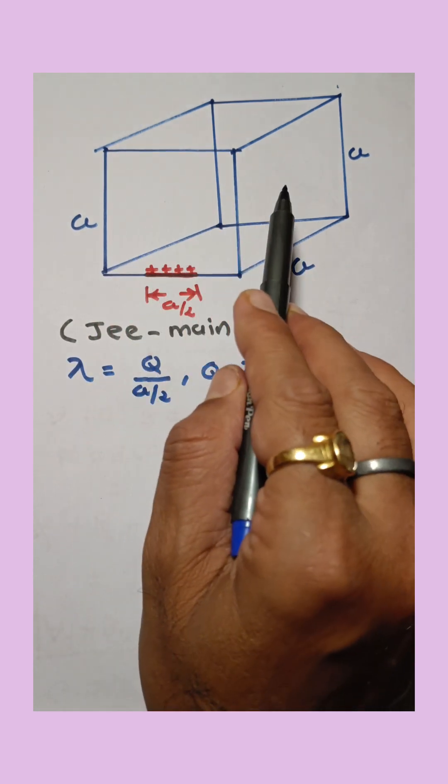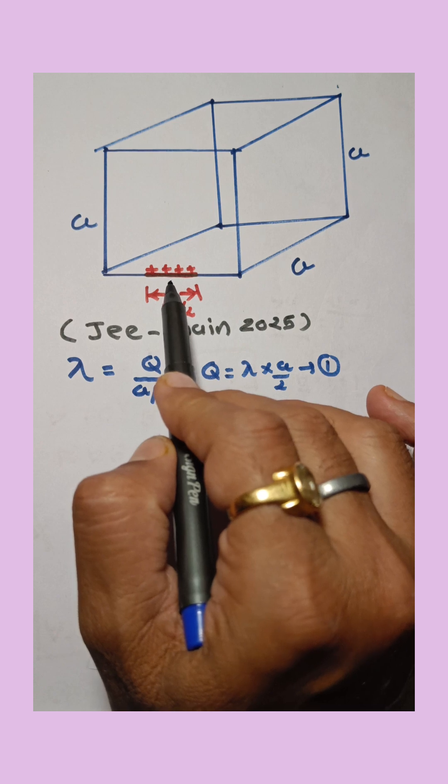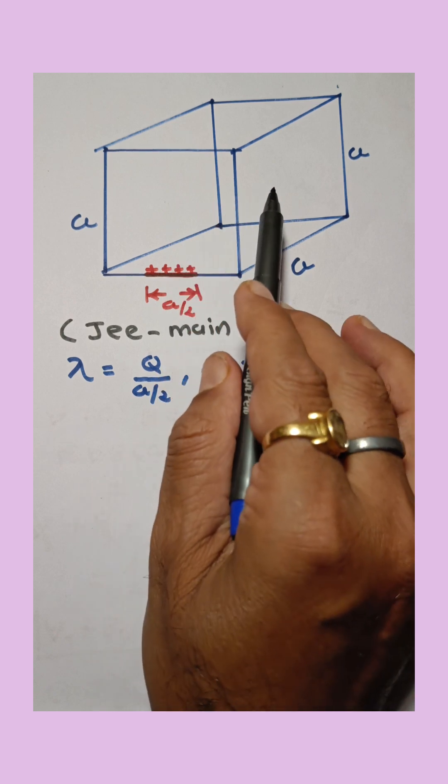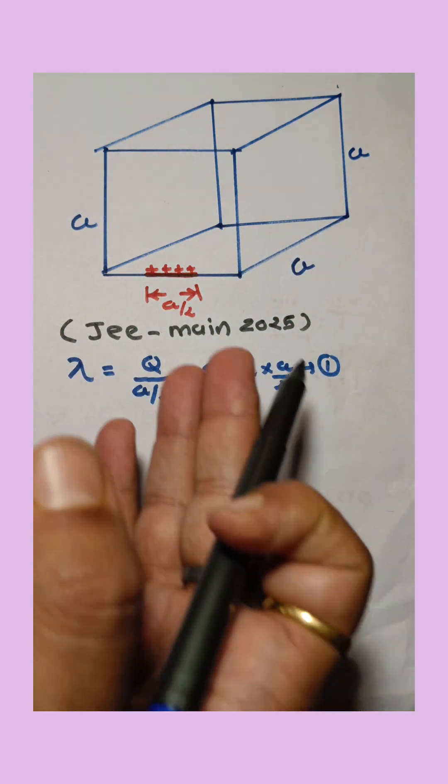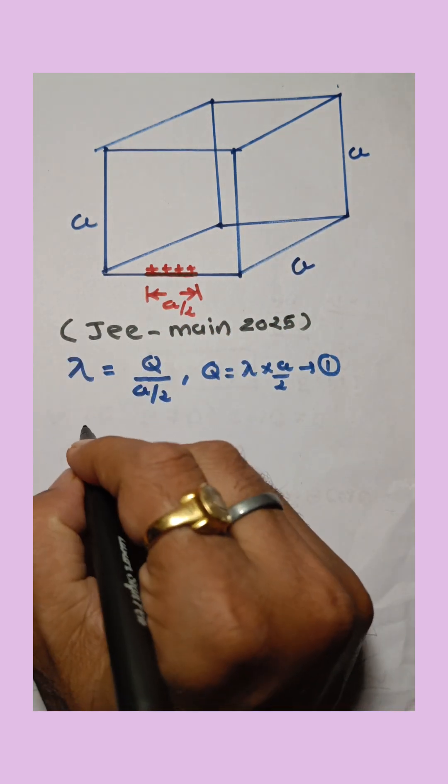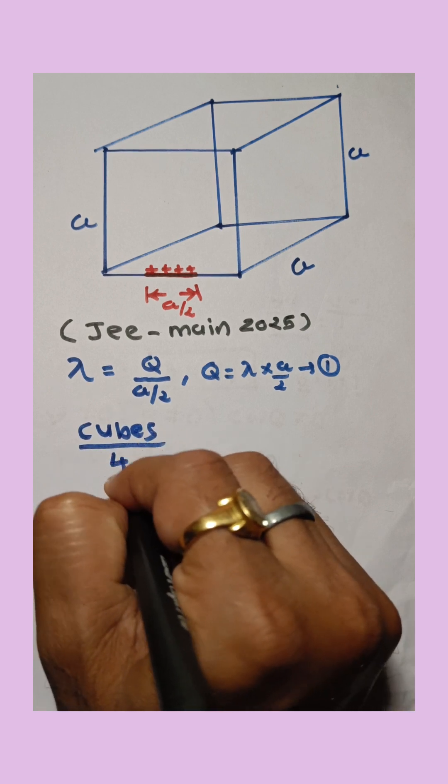Now how many total cubes are required to enclose the charge? The answer is 4 cubes total. First cube, second is in front of this, and two more cubes below this cube. So total 4 cubes are required to enclose the charge.